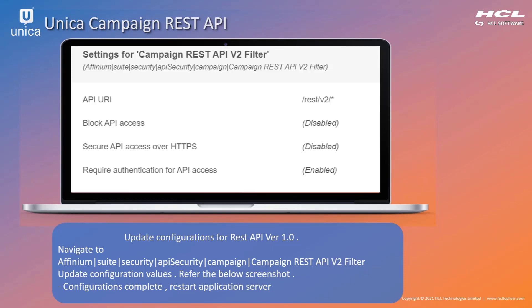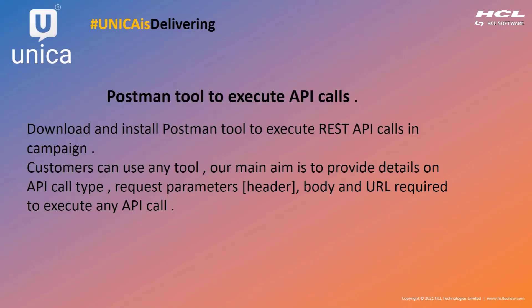Restart your application server once all these configurations are done. You can download and install the Postman tool for API executions — you can use any tool. Our main intention here is to provide valid headers, the API URL, the request JSON, and the type of call, which can be a GET call, POST call, etc.